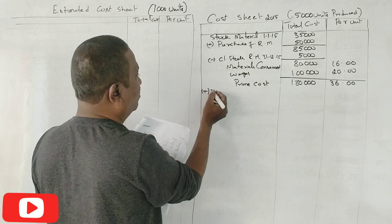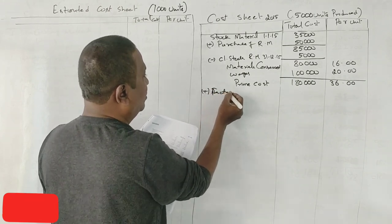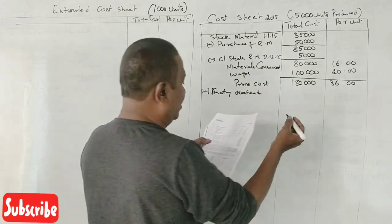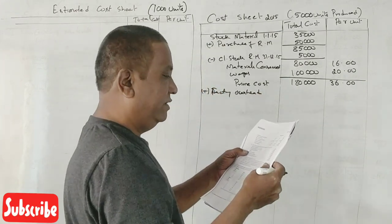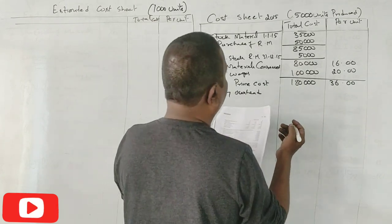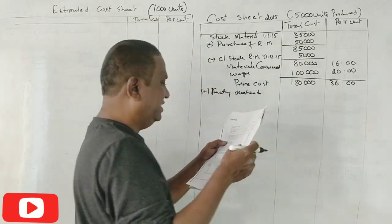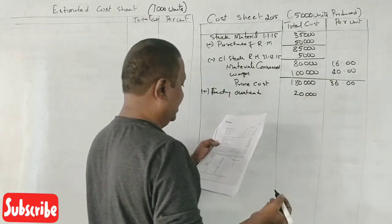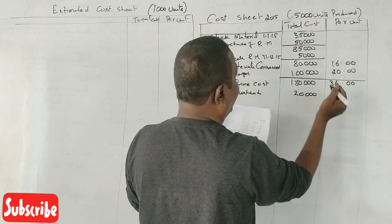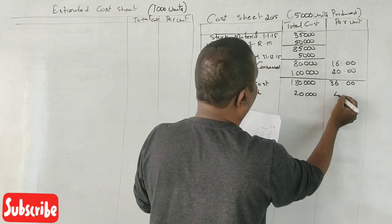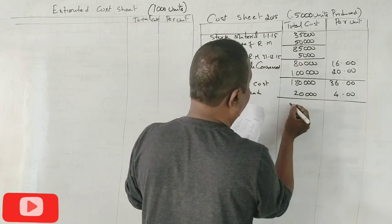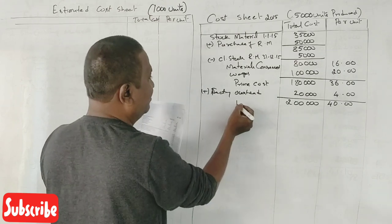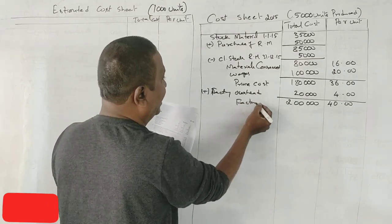To this prime cost, we add factory overheads. What is the factory overhead given in the question? ₹20,000. So ₹20,000 for 5,000 units — per unit is ₹4. This brings the total to ₹2,00,000 and ₹40 per unit. This is what we call factory cost.